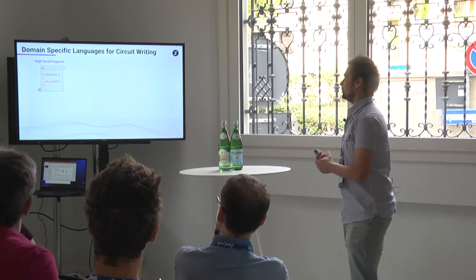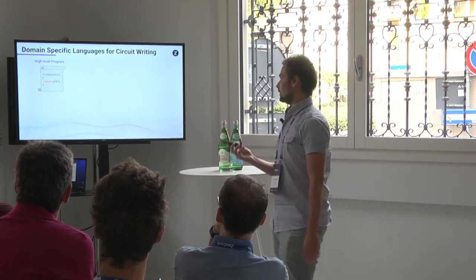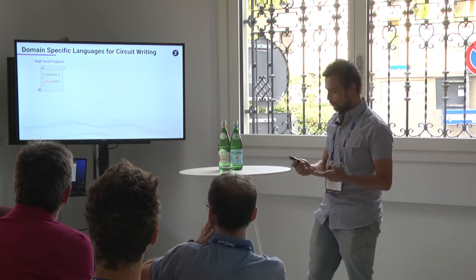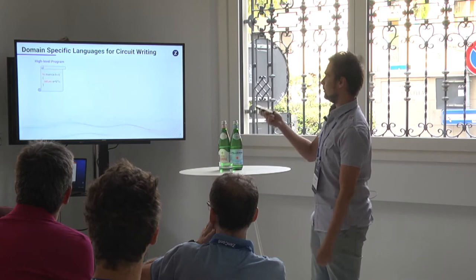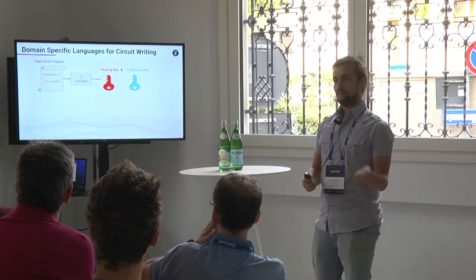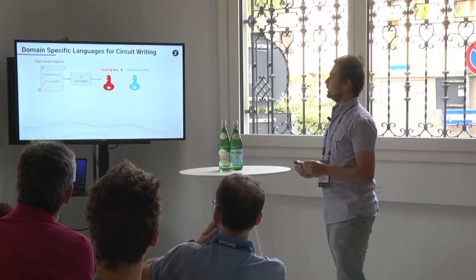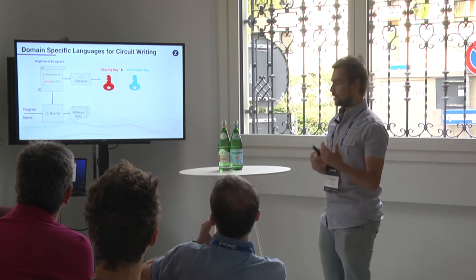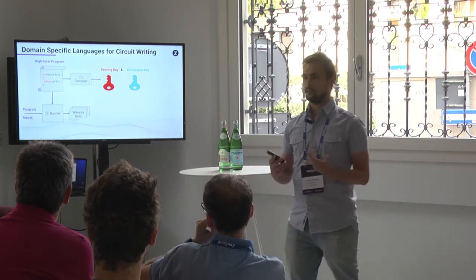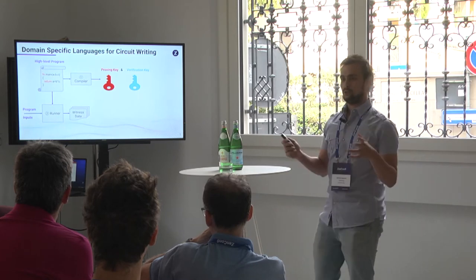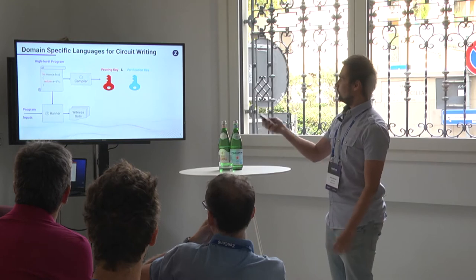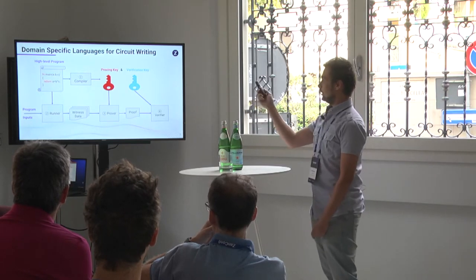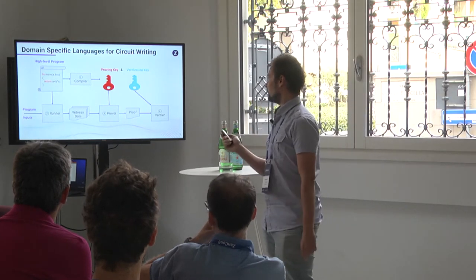We identified two different approaches. The first is defining a domain-specific language that allows specifying a circuit. Instead of developers having to write constraints, they write a high-level program, and a compiler translates it to a circuit — computing a proving key and a verification key. There is also a runner which runs the program with its inputs and generates witness data: the assignments to variables found in the compiled circuit. With witness data and the proving key, we generate a proof that can be verified with the verification key.